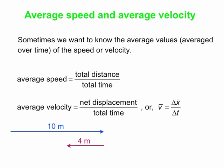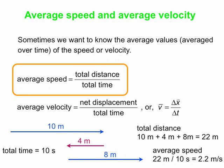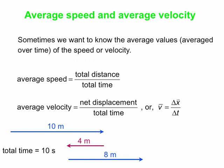Let's look at a particular example. We have a displacement of 10 meters to the right, followed by a displacement of 4 meters to the left, followed by 8 meters to the right, all in a total time of 10 seconds. To calculate average speed, we figure out the total distance covered: 10 plus 4 plus 8 gives a total distance of 22 meters. Divide by 10 seconds — on average we went 2.2 meters per second.